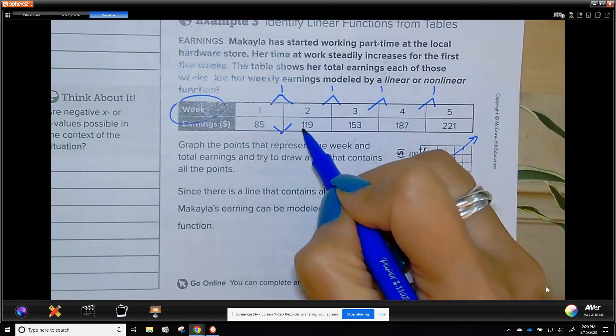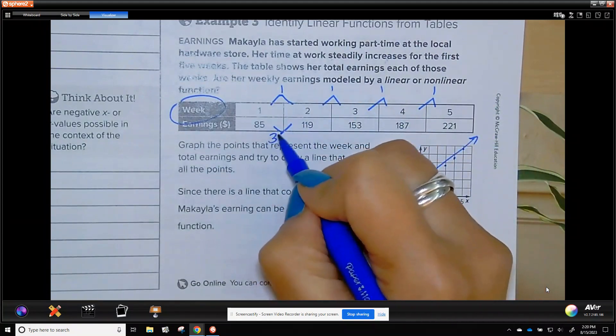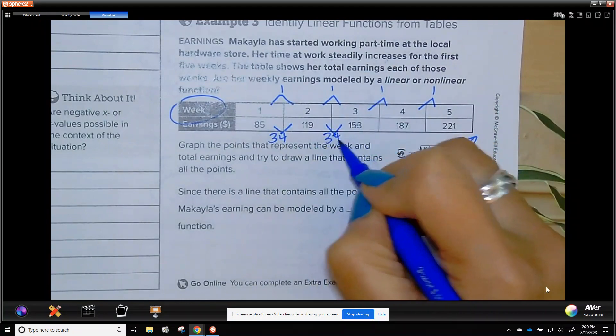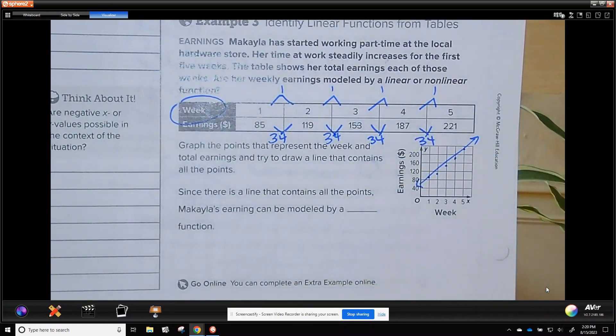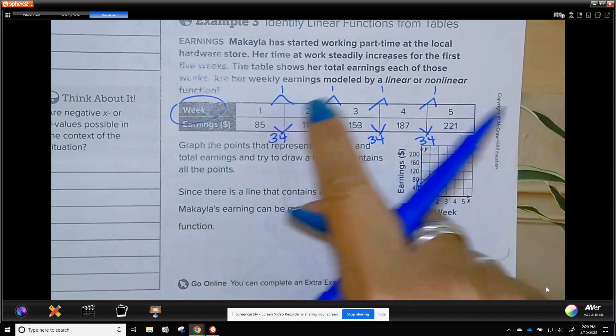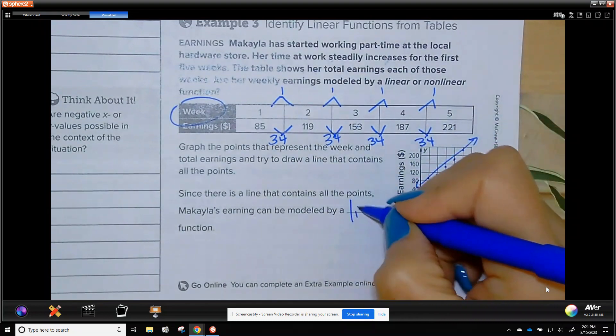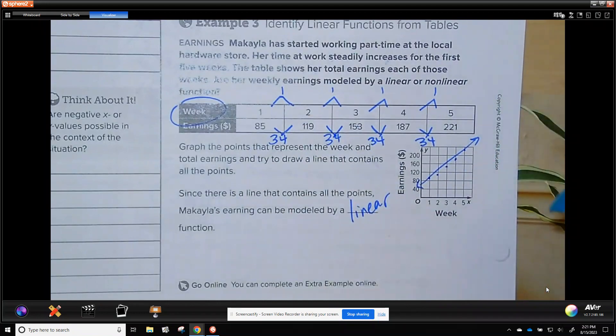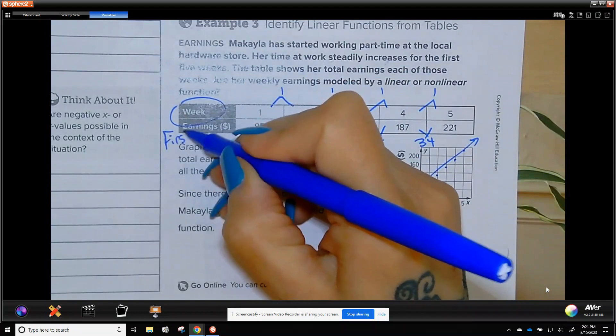But, if you cannot tell from the graph, what you could do are the differences. To go up, my x values, x values are always time, go up by 1. Now, my y values, 119 minus 85 is 34, 153 minus 119 is 34, 34, 34. I'm doing the difference, subtracting them. Since it goes up by the same amount there, goes up by the same amount on x, then it is a linear function. This is called the first difference.